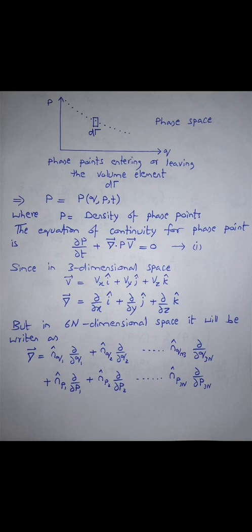In three dimensions, the tangential velocity vector is v = vₓ î + v_y ĵ + v_z k̂, and the del operator is ∇ = (∂/∂x)î + (∂/∂y)ĵ + (∂/∂z)k̂. In 6N-dimensional phase space, the del operator becomes ∇ = n̂_q₁(∂/∂q₁) + n̂_q₂(∂/∂q₂) + … + n̂_{q₃ₙ}(∂/∂q₃ₙ) for position components, and n̂_p₁(∂/∂p₁) + n̂_p₂(∂/∂p₂) + … + n̂_{p₃ₙ}(∂/∂p₃ₙ) for momentum components.